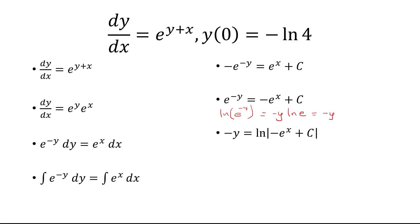That's on the left. And then on the right we have natural log of negative e^x plus c. We'll multiply again both sides by negative 1, and get that y equals negative ln of negative e^x plus c.